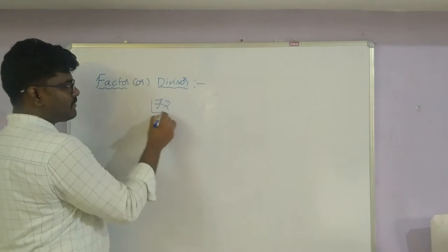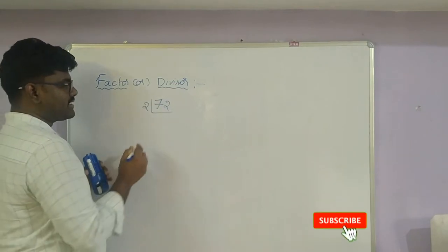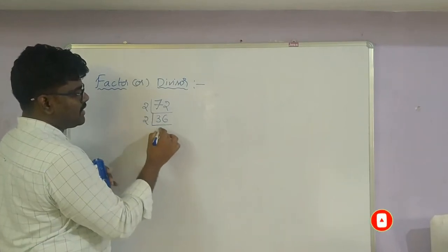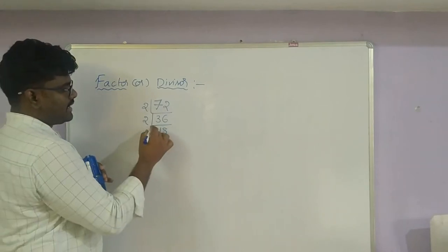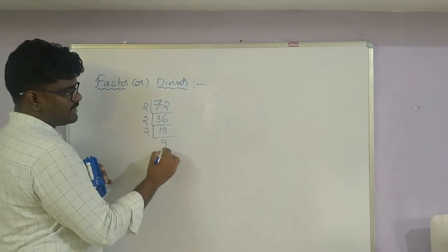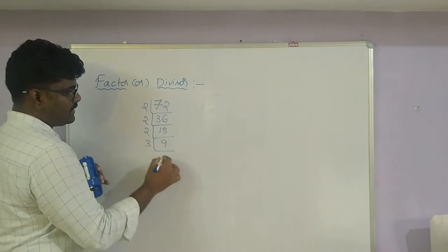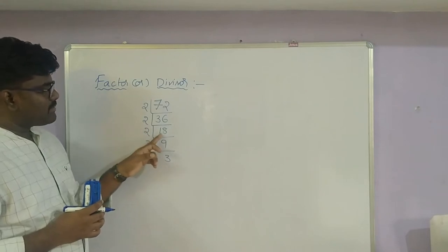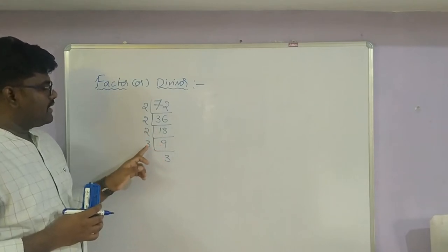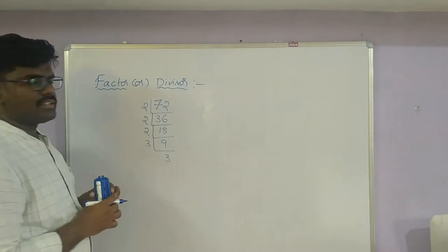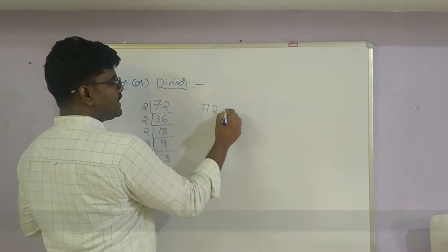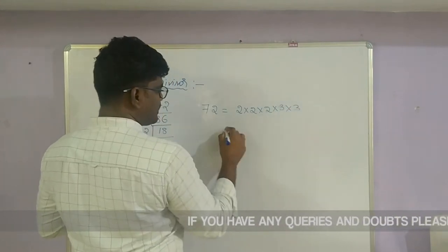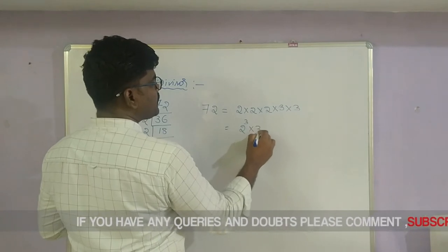What is the prime factorization of 72? Dividing by 2: 72 ÷ 2 = 36, then 36 ÷ 2 = 18, then 18 ÷ 2 = 9, then 9 ÷ 3 = 3, then 3 ÷ 3 = 1. So 72 can be written as 2 × 2 × 2 × 3 × 3, that is 2 cubed into 3 squared.